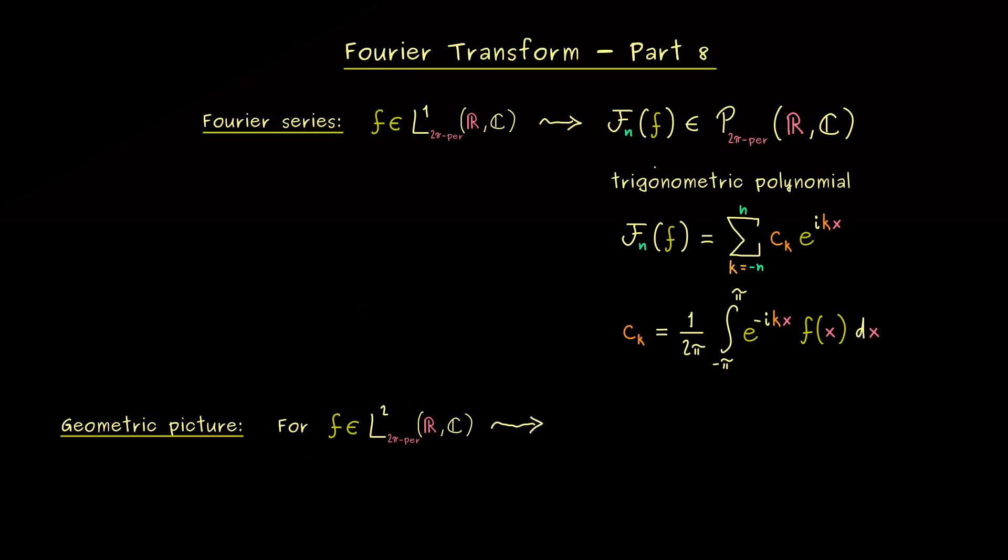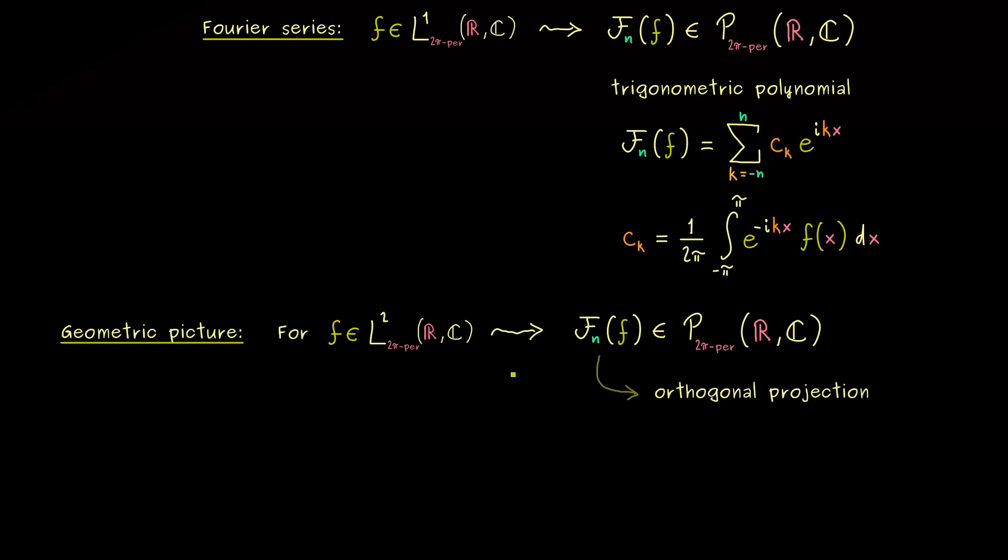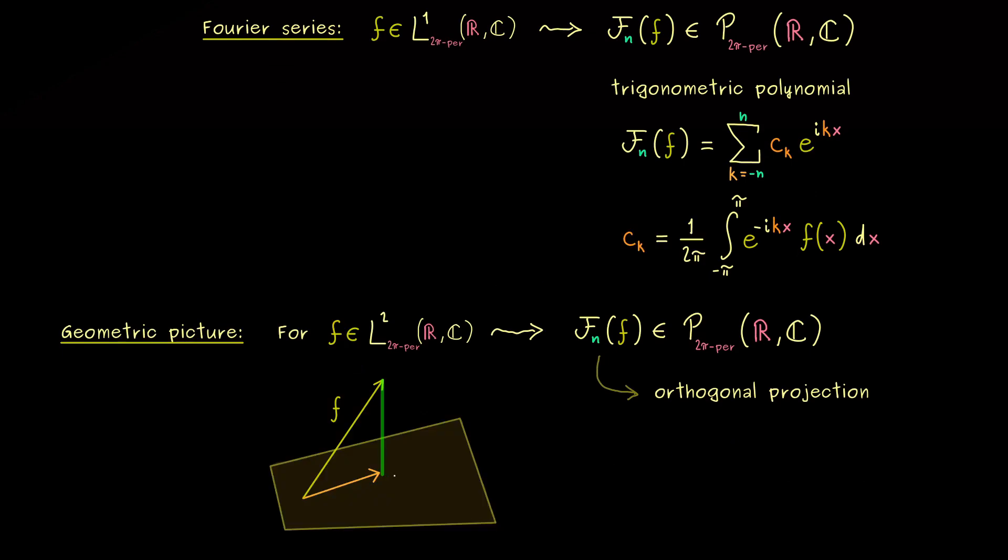And then indeed we have a very nice geometric picture, because f_n of f is just an orthogonal projection. This is a big advantage, because we can use all the knowledge we have about orthogonal projections already. In fact, what we will discuss today holds in general for inner products. It turns out the whole thing is a geometry argument which just uses that we have a right angle here.